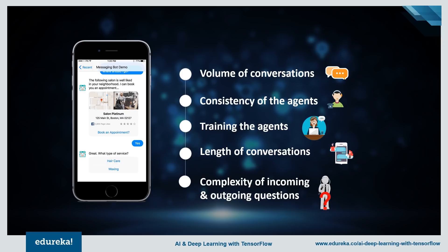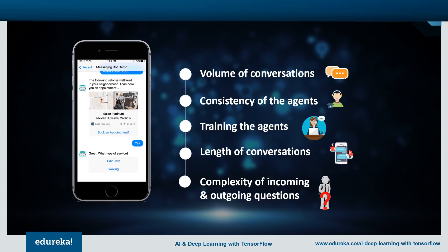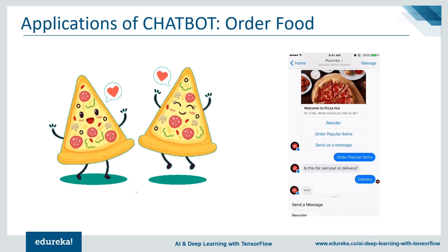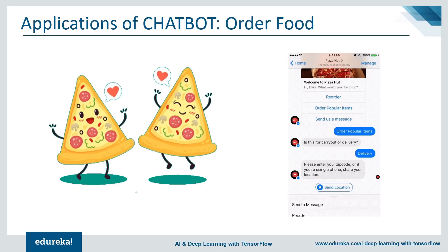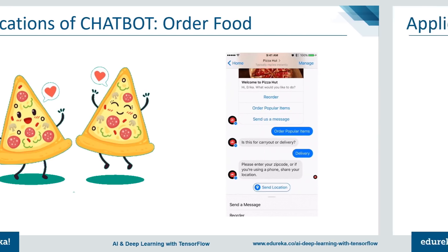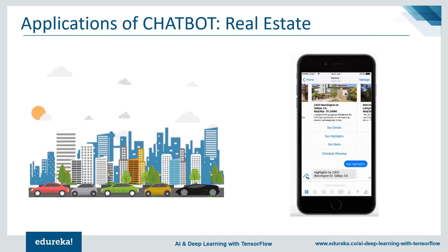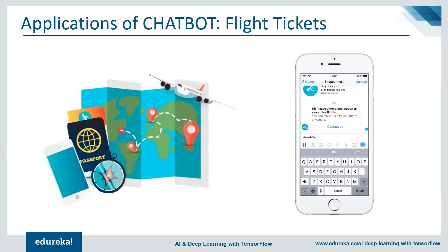Let's look at some applications of chatbots in everyday life. Ordering favorite food has become much easier — we can take help from an online assistant and select options for delivery through messenger and have pizza delivered at our doorstep. If you're looking for a house, the chatbot will work as your personal assistant to find that perfect house in your desired location. We all have booked flight tickets online, but with a chatbot the work is even simpler — just provide your destination and it finds suitable flights so you can book with just one click.